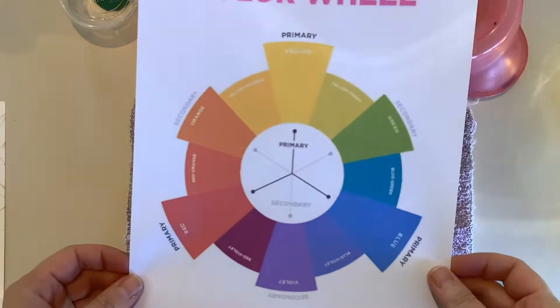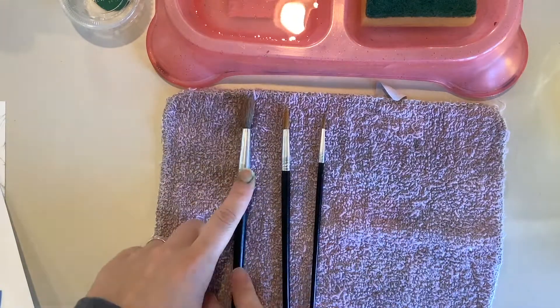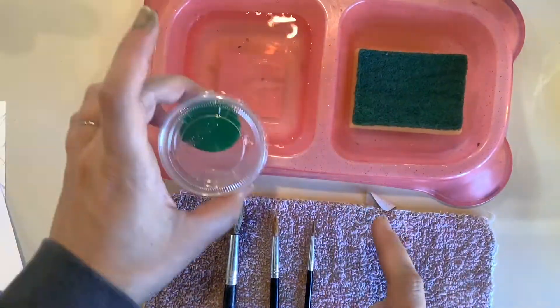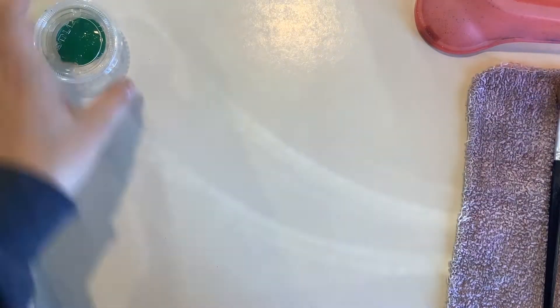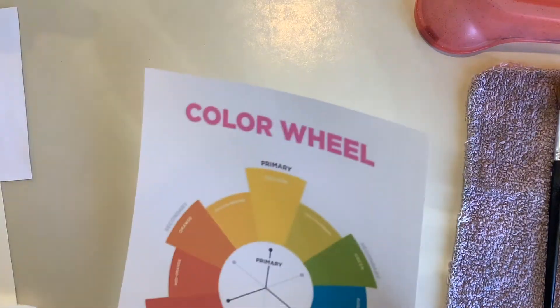Hello class, today we're getting started with part 2 of painting. So in order to do that you'll have a setup that looks like this: some large, medium, small brushes, a sponge, some water, and your paint. It does need to look nice and neat like this when you put it away.